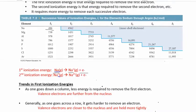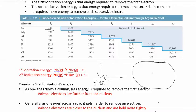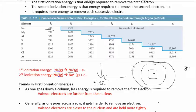Ionization energy has the complete opposite trend compared to atomic size. Size increases going down and to the left. The bigger the atom, the lower its ionization energy, because the outermost valence electron is far from the nucleus and not strongly attracted to it — it's pretty easy to remove. Conversely, a really small atom holds its electrons close to the nucleus very tightly, so it has a really high ionization energy.